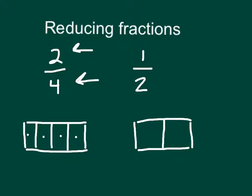So 2 fourths, my top number 2 numerator tells me I'm going to shade 2 pieces. Let's look at 1 half. We have the denominator of 2 equal pieces. I'm going to shade 1 of them.